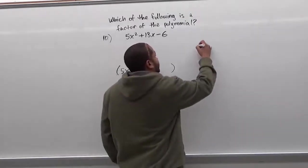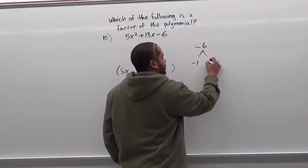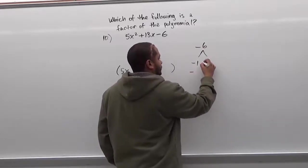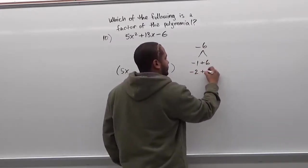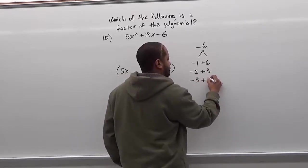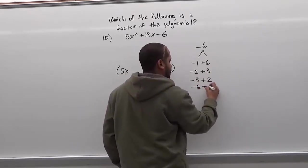And the factors of negative 6 are going to be negative 1 and 6, negative 2 and positive 3, negative 3 and positive 2, and negative 6 and positive 1.